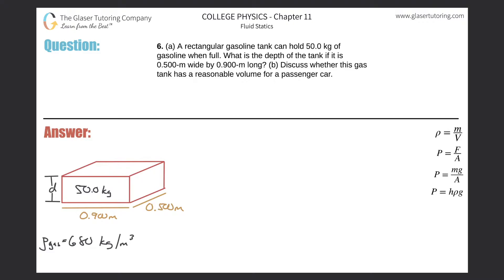Number six, letter A: A rectangular gasoline tank can hold 50 kilograms of gasoline when full. What is the depth of the tank if it is 0.5 meters wide by 0.9 meters long? Here's the tank. We can fill it with 50 kilograms of gasoline. We know the length, 0.9, and we know the width.